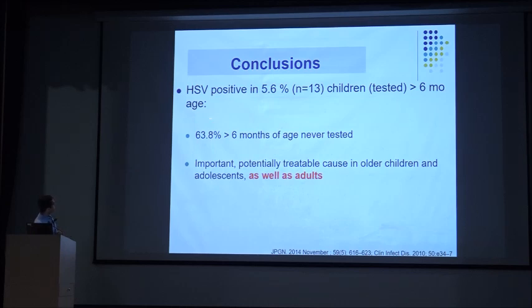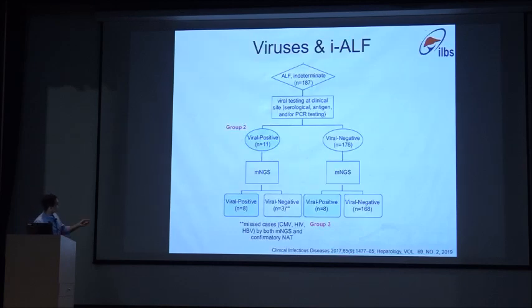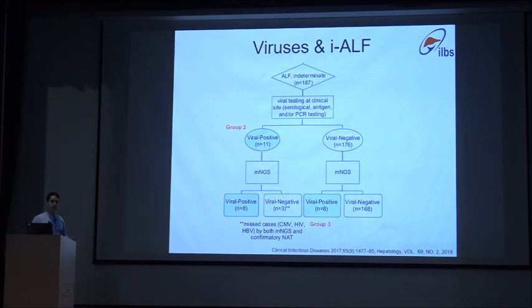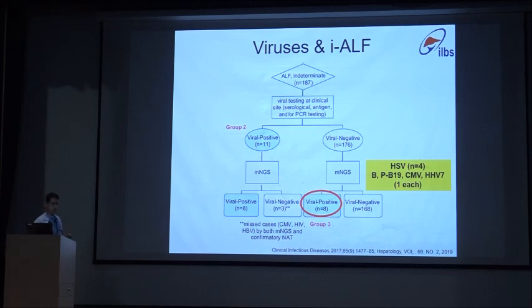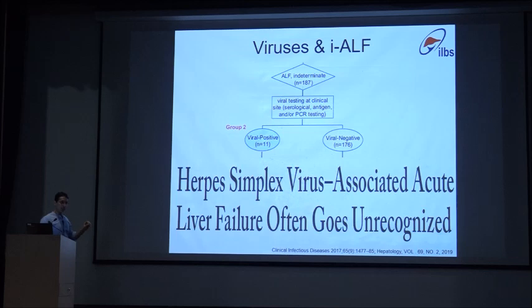The recommendation is that HSV can be a potentially treatable cause in older children, adolescents, and adults. Even in adult data, from 187 indeterminate patients who were viral-negative, metagenomic sequencing identified 8 positive cases, including 4 cases of HSV, plus parvovirus B19, CMV, HHV7, and hepatitis B. A Hepatology 2019 paper from the ALF study group confirmed that HSV-associated acute liver failure often goes unrecognized. Among 1,600 patients, 20 cases were retrospectively positive, and these patients had a higher proportion of fever, malaise, rash, and very high AST.